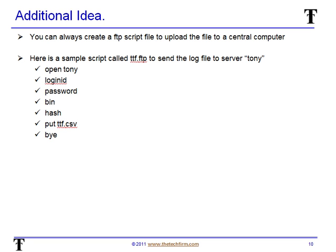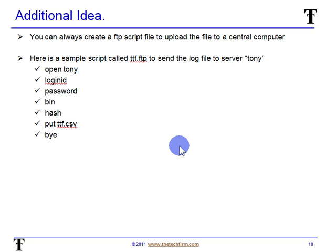I've always got a little twist on things. What if the client ran this script on their laptop for a period of time, and then a little batch file took this file and uploaded the CSV or log file to my PC? This is an example of an FTP script called ttf.ftp — it's just: open Tony (the server name or IP address), login ID, password, bin and hash are optional. And then put — it takes that log file from that computer and copies it up to my machine. From the client's perspective, it's just: FTP -s:ttf.ftp and that's it.